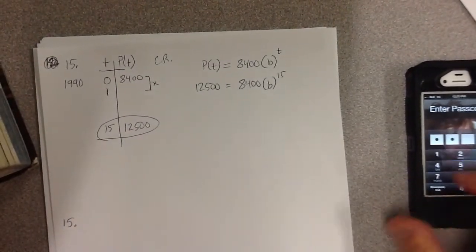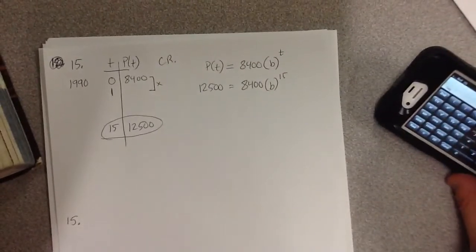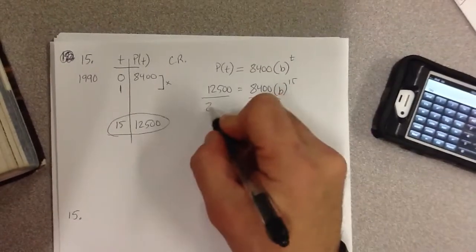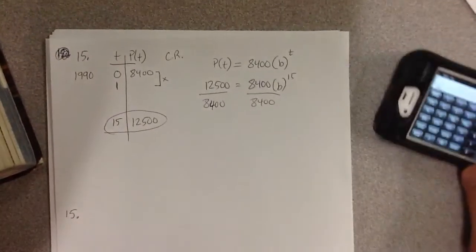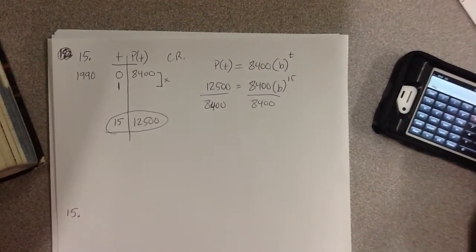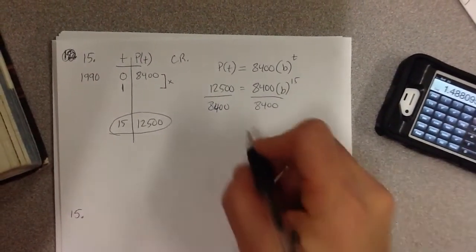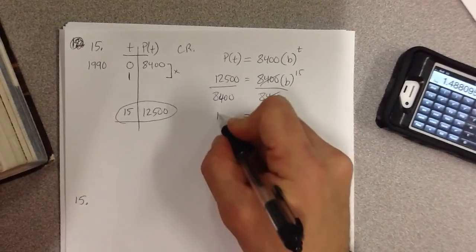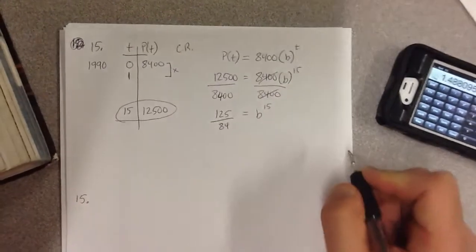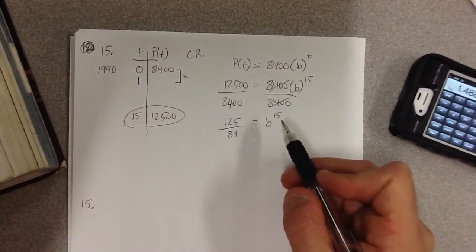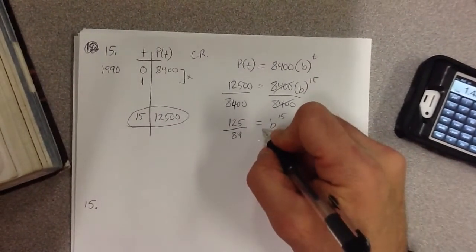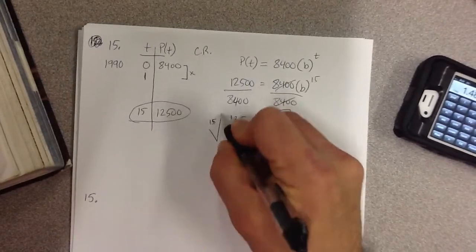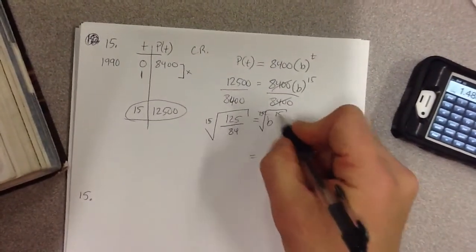Continuing this, now I can actually solve for B. This doesn't require logs because B is the base. So if I divide both sides by 8,400, I'm going to get B to the power of 15 is equal to, and when I reduce this, this will be 125 all over 84. And how do I continue this? Well, B to the power of 15, how do I get rid of to the power of 15? Well, I can take the 15th root, that's the opposite operation of to the power of 15, the 15th root of both sides. That gets rid of this.